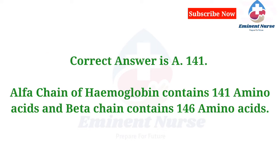Correct answer is A. Alpha chain of hemoglobin contains 141 amino acids, and the beta chain contains 146 amino acids.